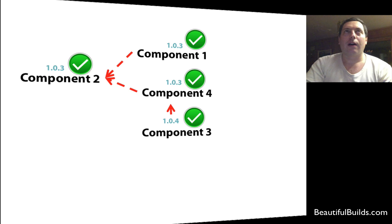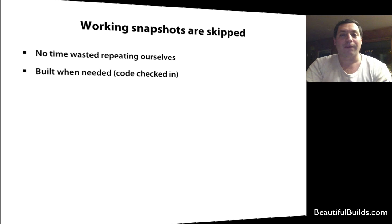So, if component four has succeeded, and there were no check-ins when we move to a new version, component four will not be built. We'll just reuse the existing artifacts, and that saves a lot of time. Working snapshots are skipped.